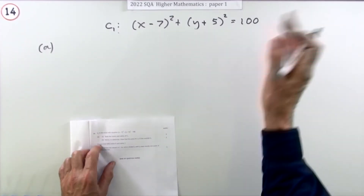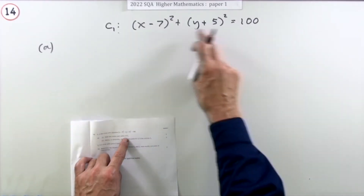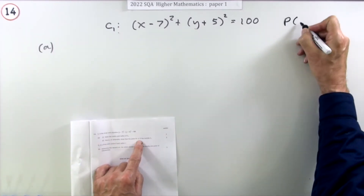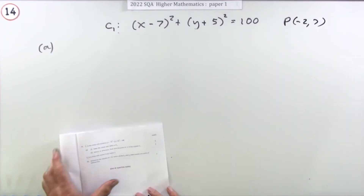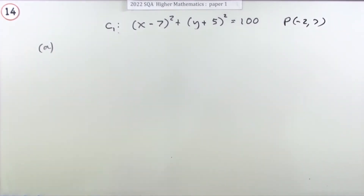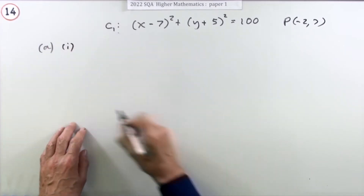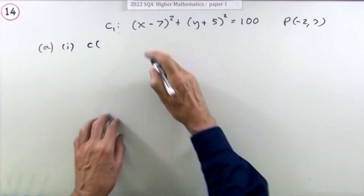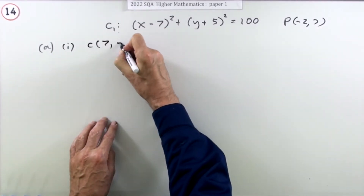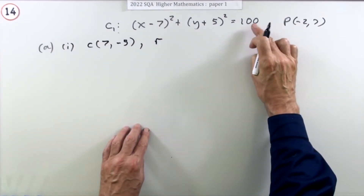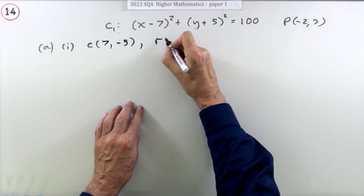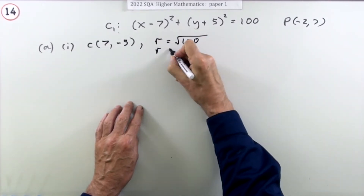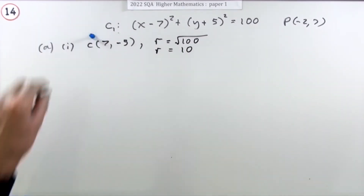C1 is the circle. State the centre and radius — that's straight away two marks. We just read them off: it's whatever it takes to make the bracket zero, so the centre is (7, -5). The radius squared is 100, so the radius is the square root of 100, which means the radius is 10.